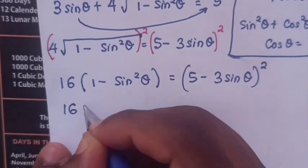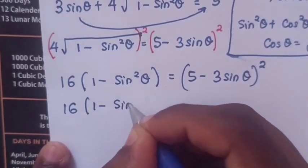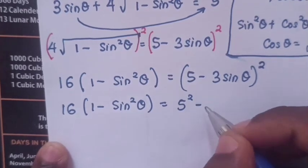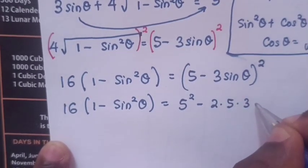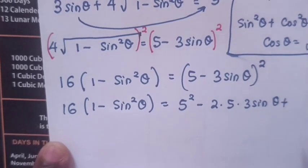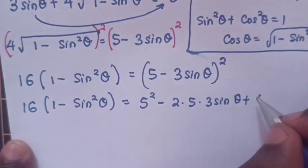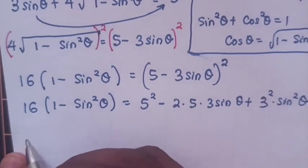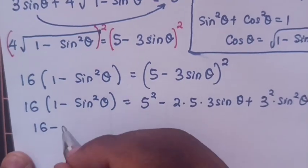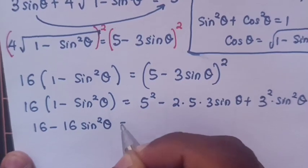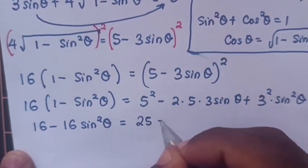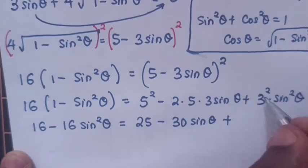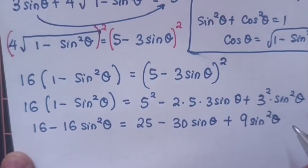Expanding the right side: 16(1 − sin²θ) = 5² − 2·5·3 sin θ + (3 sin θ)², which simplifies to 16 − 16 sin²θ = 25 − 30 sin θ + 9 sin²θ.